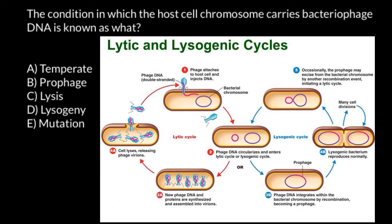People usually make a mistake about which cycle has which name. As you see, when the bacteriophage genome is integrated into the bacteria genome, we call this lysogenic — the word 'gen' is present in the name of this cycle, like an extra genome. So now you know that lysogenic is the cycle when the bacteriophage genome is integrated into the genome of the bacteria.